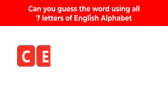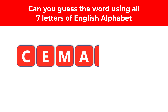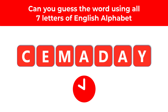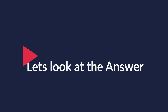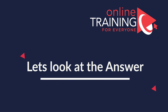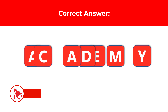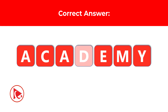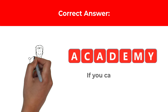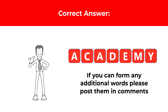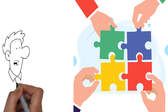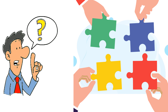Here's a tricky problem we frequently see on the test. You're presented with seven letters of the English alphabet: C, E, M, A, D, A, and Y — and you need to guess the word using all the letters. Give yourself 15 to 20 seconds. The correct answer is the word 'academy,' spelled A-C-A-D-E-M-Y. If you guessed any other words meeting the criteria, post them in the comments. To get better at word puzzles, try crosswords and the Scrabble game.